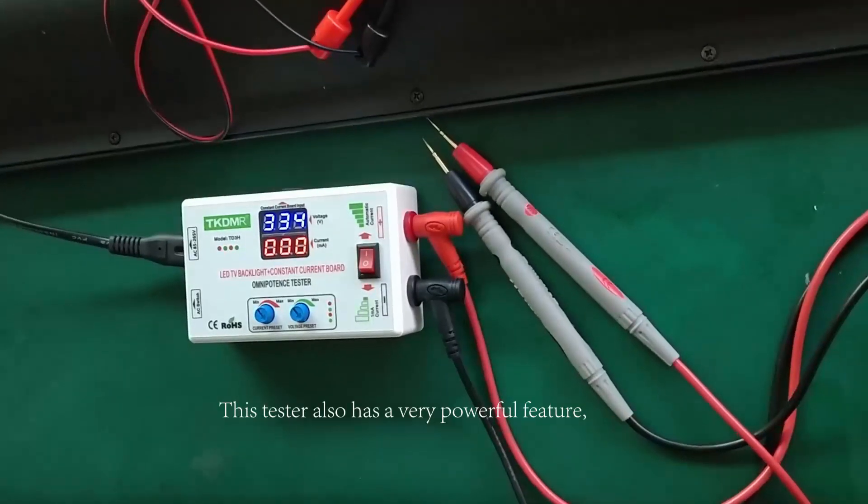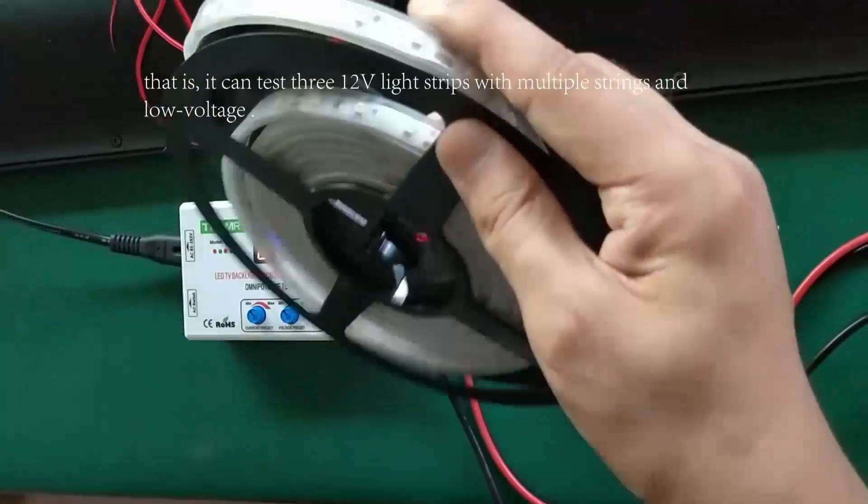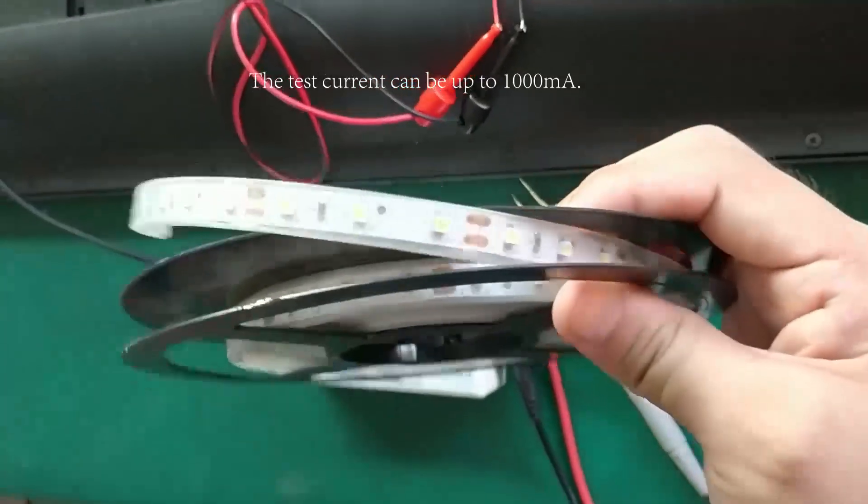This tester also has a very powerful feature. It can test 12 voltage light strips with multiple strains and low voltage. The test current can be up to 1000 milliampere.